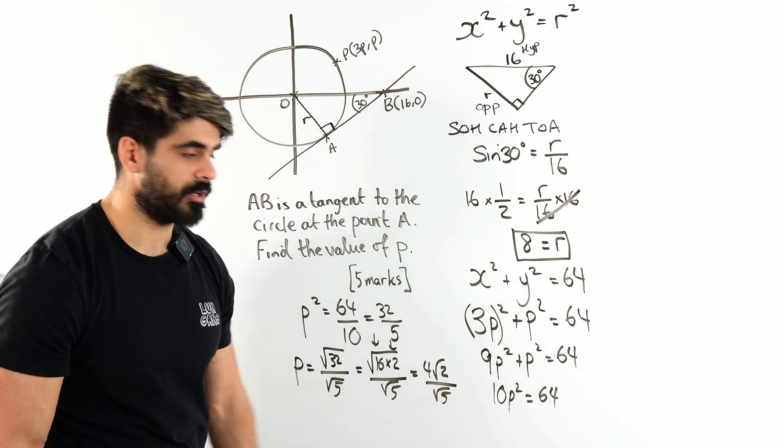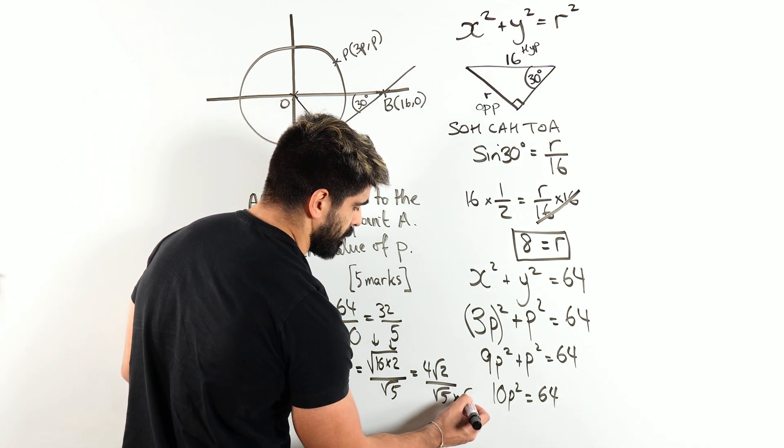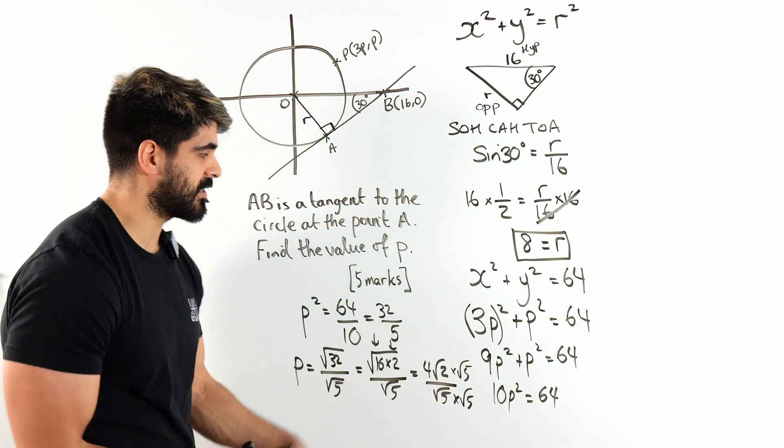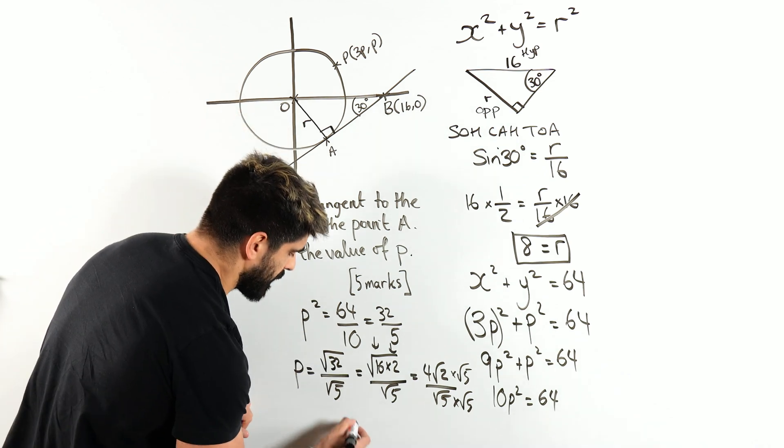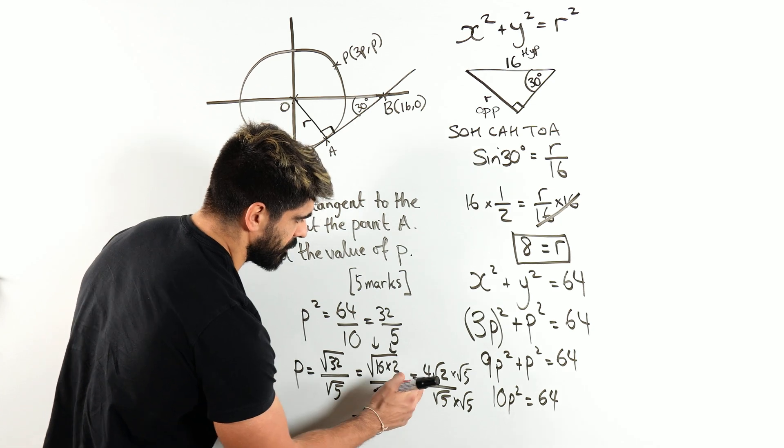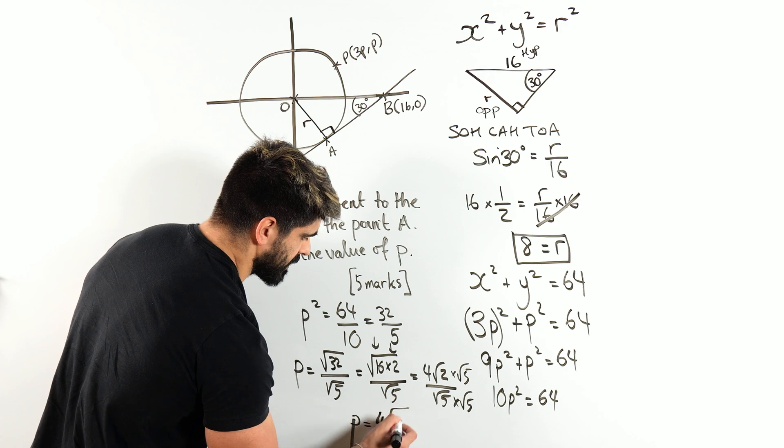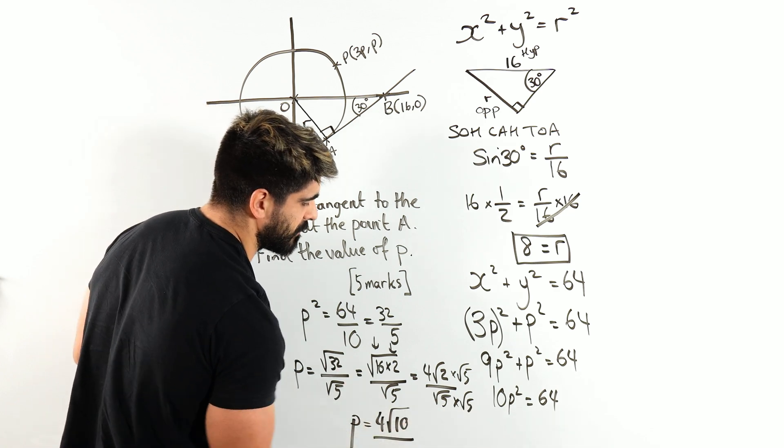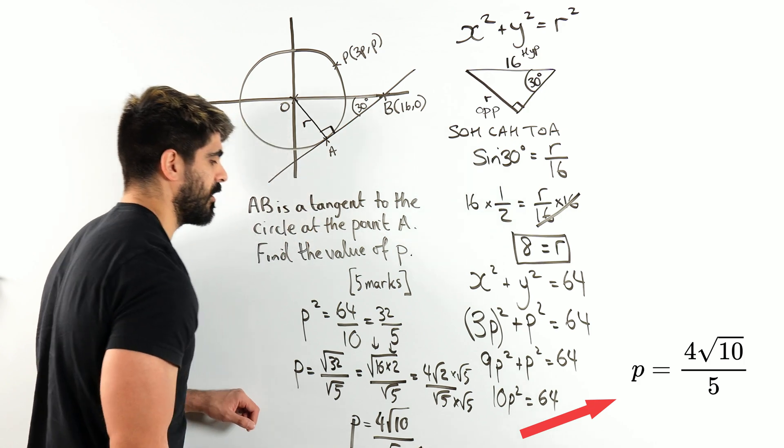Are you going to leave your answer like this? I hope not. We don't like surds in the denominator. So we're going to times top and bottom by root 5. In the exam, they'll instruct you on this. They'll say what form they want things in. So we are now done. So p is 4 root 2 times root 5, which is root 10 divided by root 5 times root 5 is 5. You can think of it as root 25, which is 5. And that is our answer.